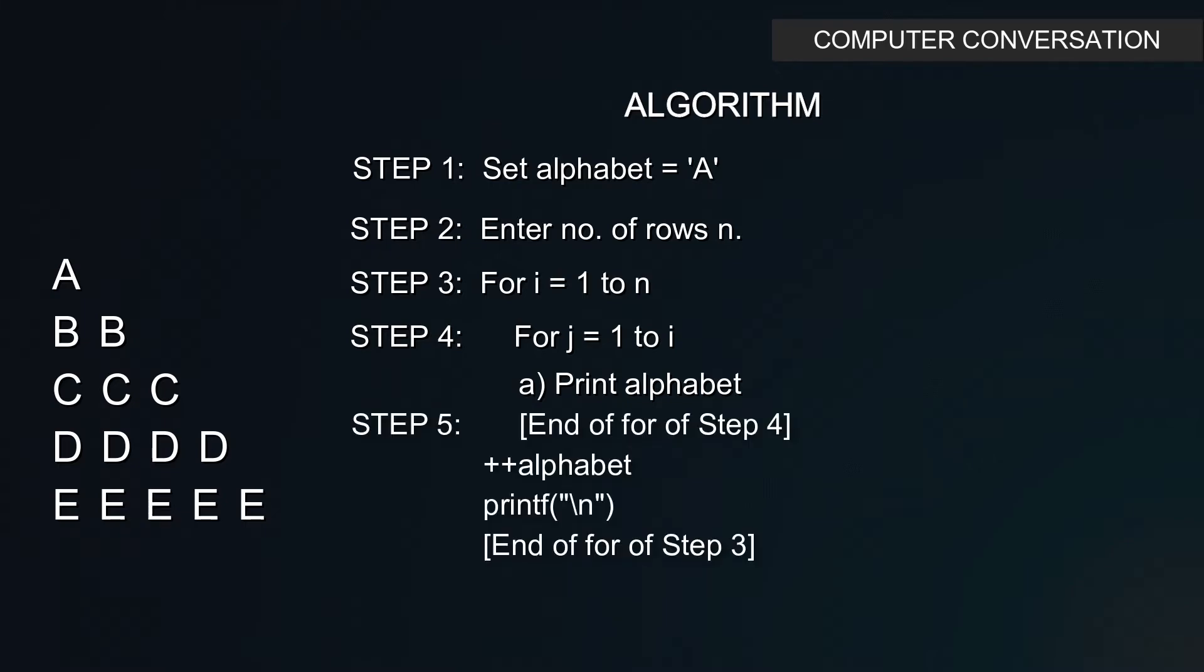Now in the step 5, close the braces of inner loop and then increase the ascii value of alphabet value by 1. So the next character will be stored and consecutively print a new line.